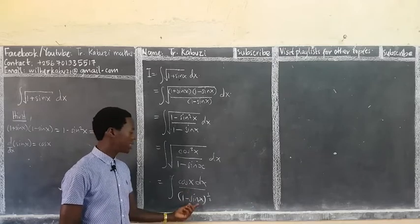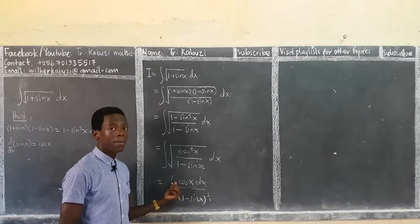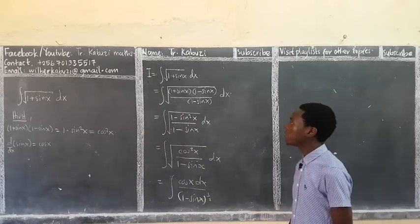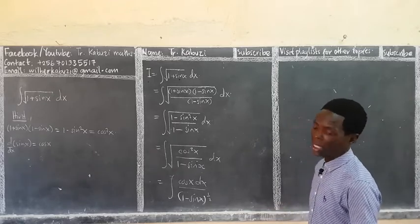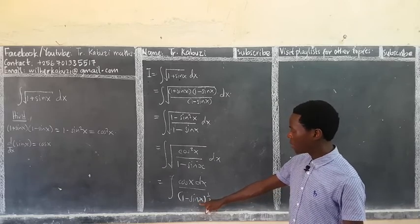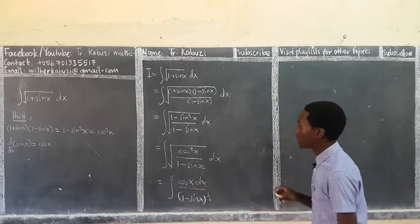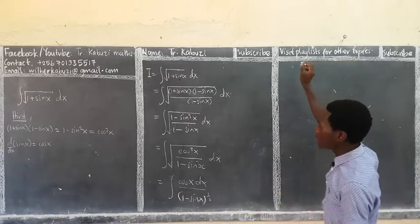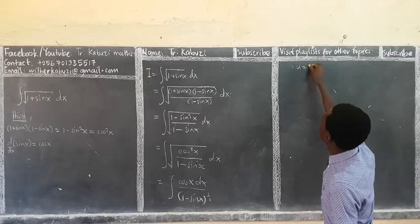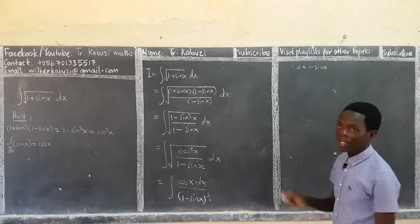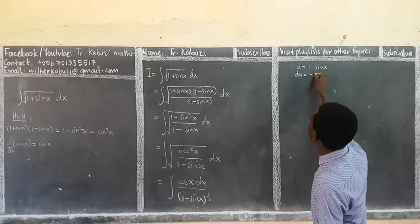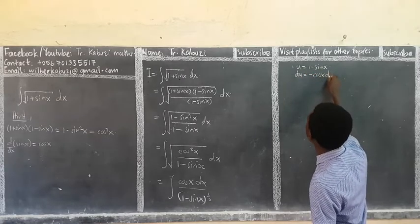Now I'll apply a change of variables. Let u = 1 - sin x. Then differentiating, du/dx = -cos x, so du = -cos x dx. The negative appears because the derivative of (1 - sin x) has a negative coefficient, giving us -cos x. So cos x dx = -du.